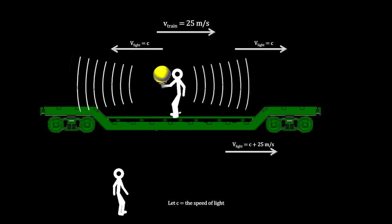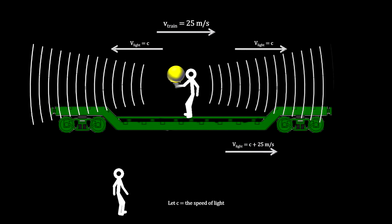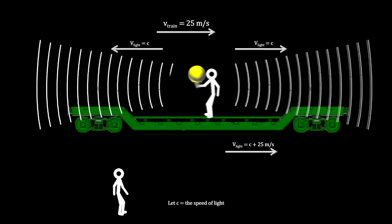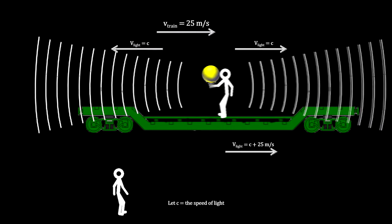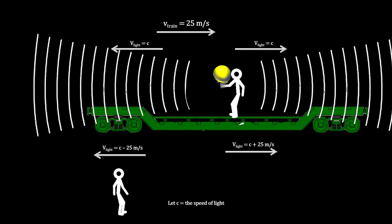But the person on the ground would measure the light moving with the train at 25 meters per second faster than that, and the speed of light traveling against the movement of the train at 25 meters per second slower than that.